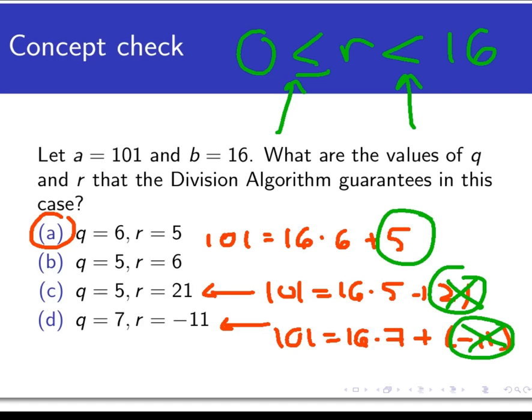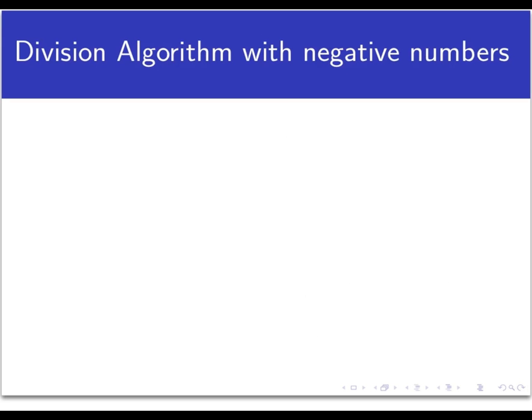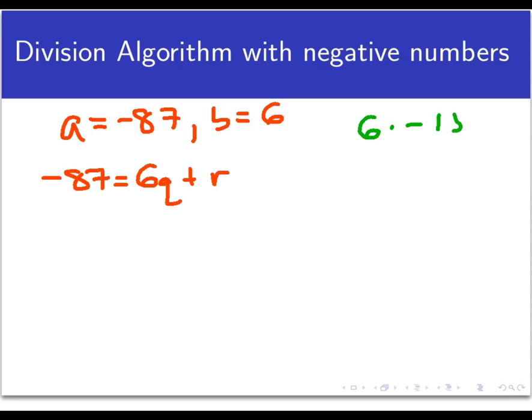The division algorithm also works if you divide into a negative number as well, which is a little different from long division because we don't often use negative numbers in long division. So for an example, take A equal to negative 87 in the division algorithm and B equal to 6. So the division algorithm says that the divisor needs to be positive, but the number we're dividing into doesn't actually have to be. So we should be able to find a Q and an R such that negative 87 is equal to 6Q plus R. Now we can try some trial and error to see if we can find that Q. Multiplying by negative 15 gives us a nice round number of negative 90, which is actually pretty close to negative 87. Is that the right quotient? Will Q equal negative 90 work?